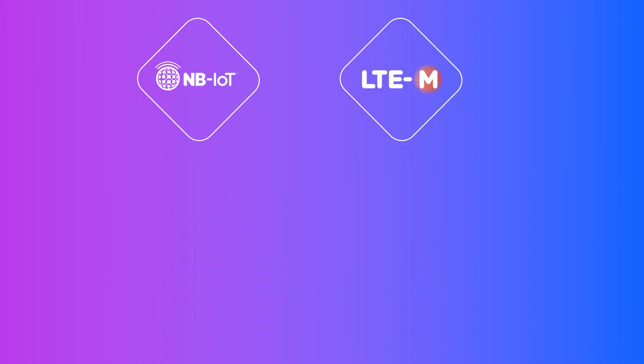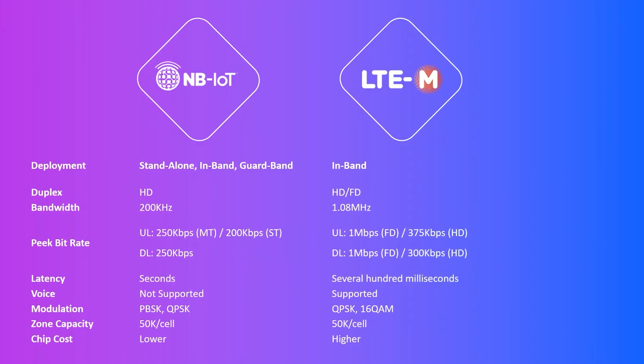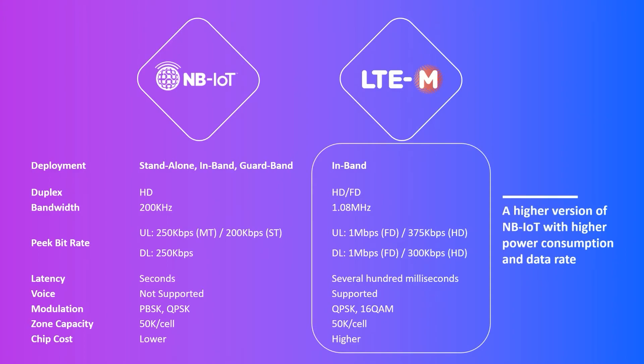So what are the differences between these two technologies? In this chart, we are able to see that generally the LTE-M has a higher bit rate and a higher bandwidth than NB-IoT. It also supports voice communication and uses a more complicated modulation. It roughly means that LTE-M, the eMTC, is a higher version of NB-IoT with higher power consumption and data rate.